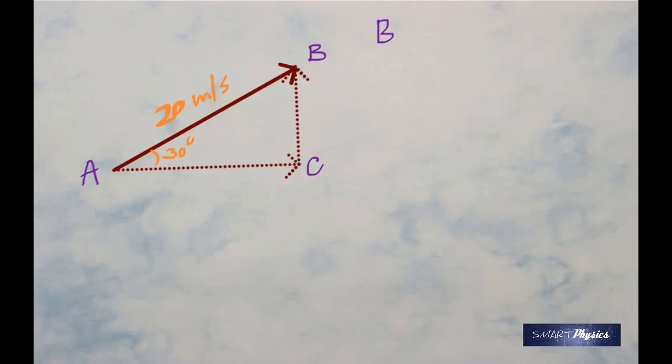Now this is something that you've got to do all the time in physics. So you've got to be an expert in this. How do we find AC and BC?